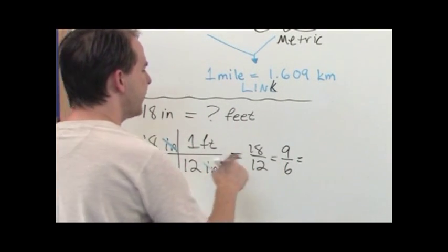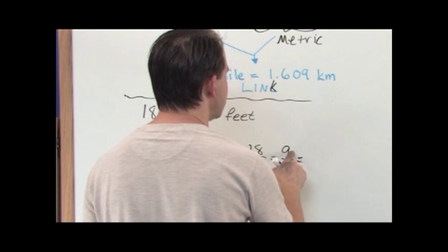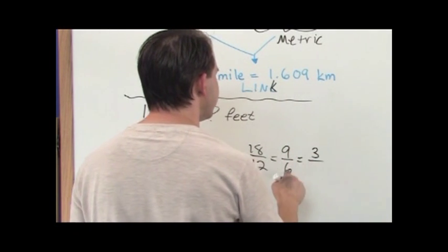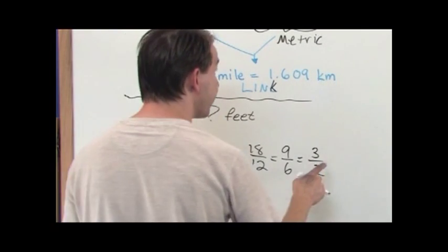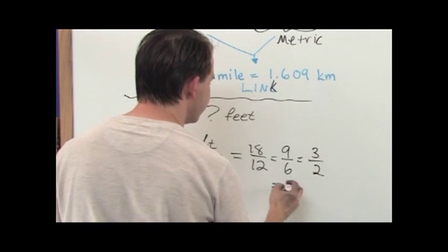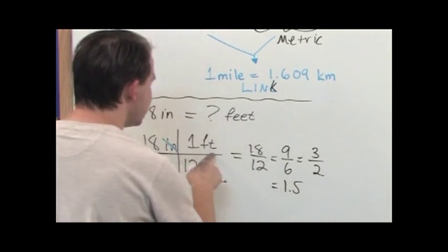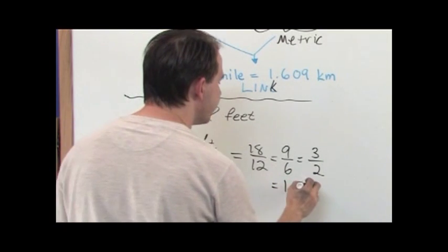You can simplify this further divided by 3, 9 divided by 3 is 3, 6 divided by 3 is 2. So you're going to have 3 halves, and so this is going to come out to 3 halves when you do the math is 1.5. The unit in the answer is what's on top, feet.